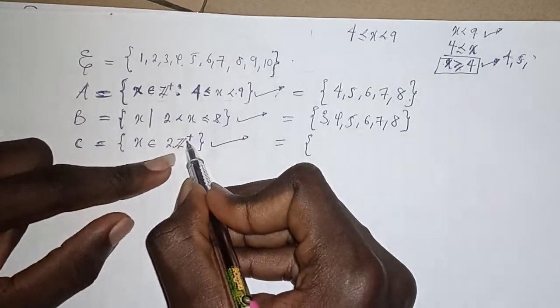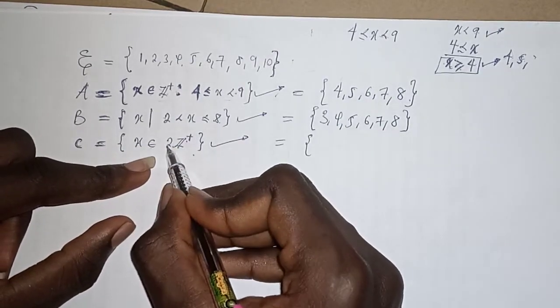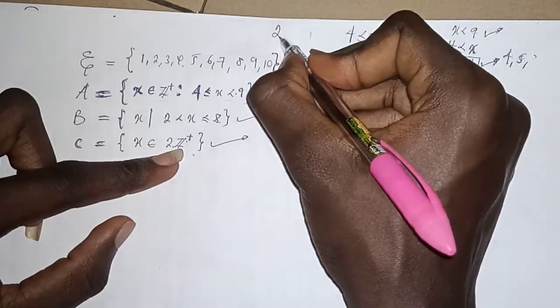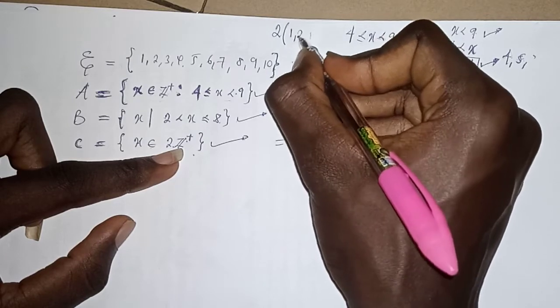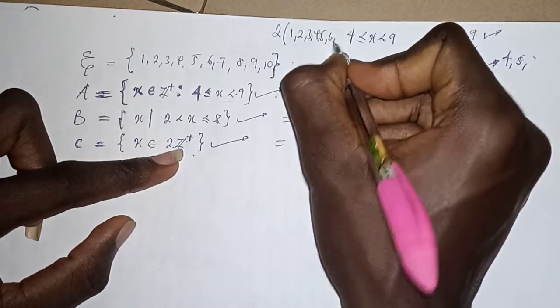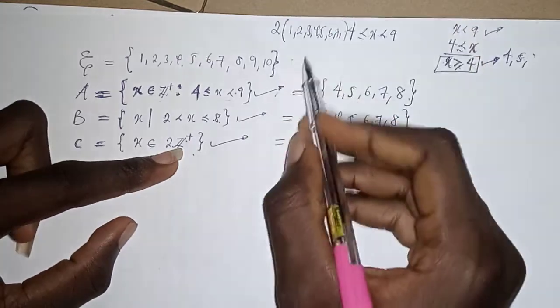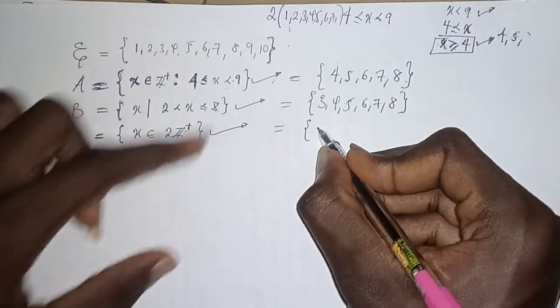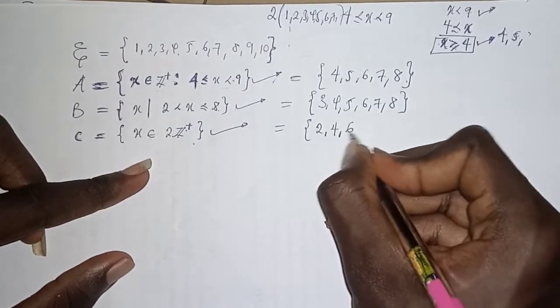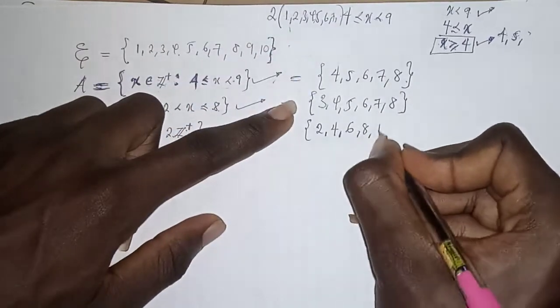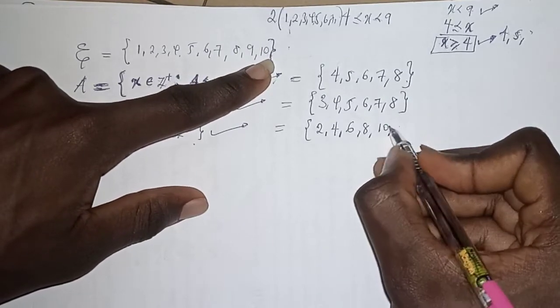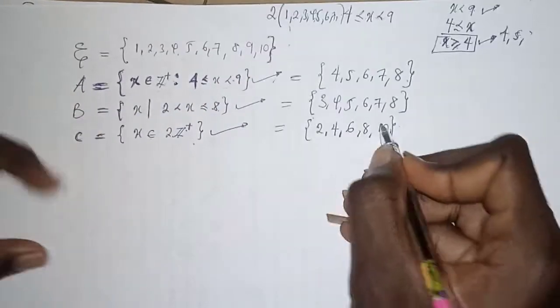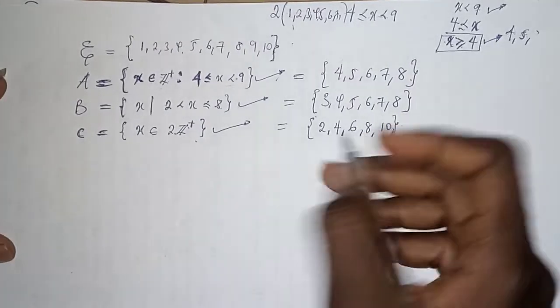For set C, X is a member of twice of positive integers. Positive integers are one, two, three, four, five, six, seven. Taking twice of each: two times one is two, two times two is four, two times three is six, two times four is eight, two times five is ten. I cannot go beyond the universal set, so I stop at ten. Set C = {2, 4, 6, 8, 10}.